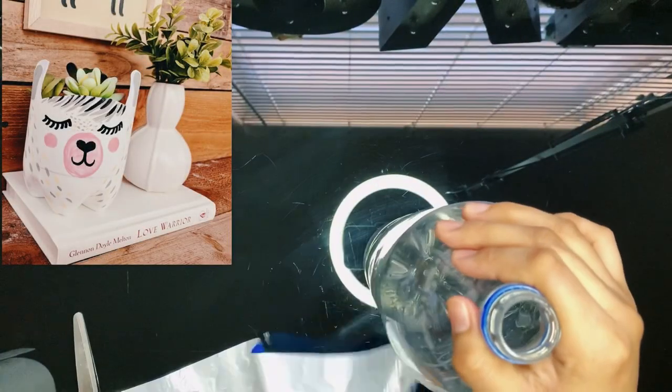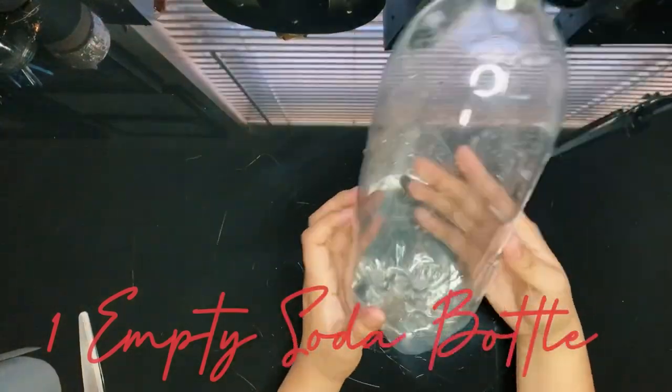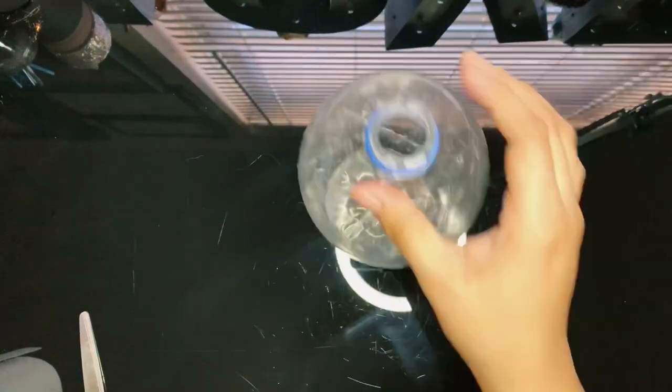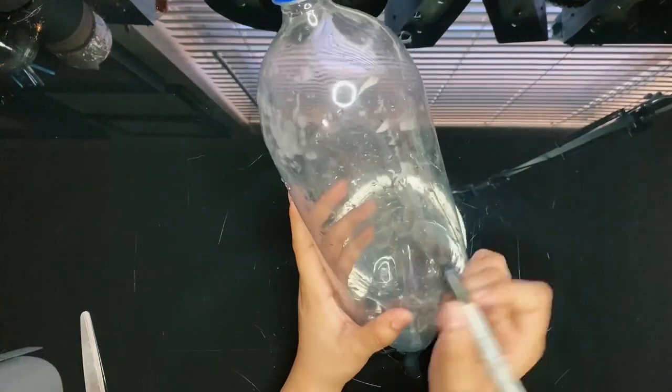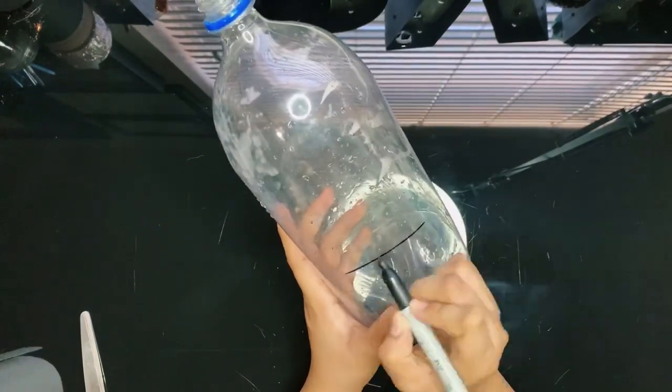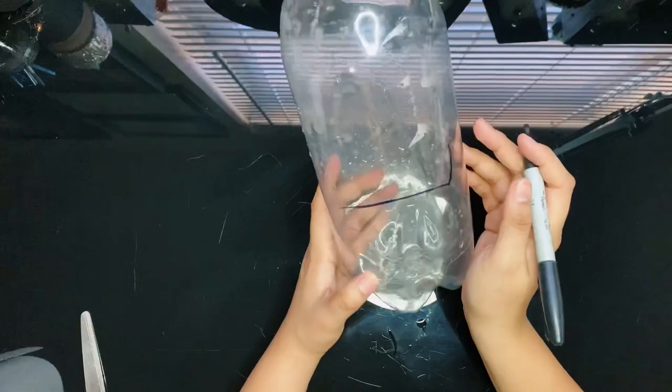We will start by making our llama planter. You will need a one liter plastic bottle. Remove the label. Now with a permanent marker I'm going to draw some little ears for my llama and I'll draw the shape of my planter.